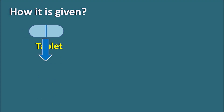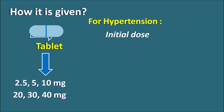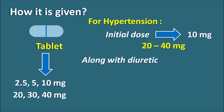How is it given? Lisinopril is given in tablet form and is available at different strengths: 2.5, 5, 10 mg, and also at higher doses like 20, 30, and 40 mg — both as plain Lisinopril tablets and combined with diuretics. For treatment of hypertension, the dose is initially started at 10 mg once daily and can be increased to between 20 to 40 mg once daily. To increase efficacy, Lisinopril can also be combined with a diuretic, but when combined the dose of Lisinopril should be reduced to prevent sudden hypotension.